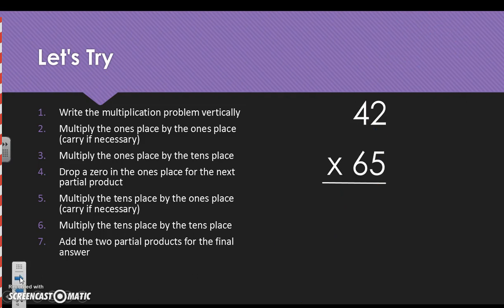Let's try another one. We write the problem vertically. We multiply the ones place times the ones place. So 2 times 5 is 10. Carry the 1, drop the 0. 4 times 5 is 20, plus this 1 that we carried is 21. Drop the 0 because this is not a 6, it's a 60.